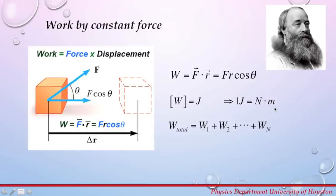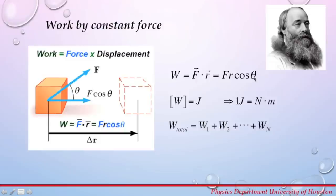Work can be positive or negative depending on the angle θ. If a force or a component of it is in the direction of the displacement, the work done on the object will be positive. If the force acts in the opposite direction of the displacement, the work done by the force will be negative. If the force is perpendicular to the displacement, the total work done on the system will be zero, because cosine of 90° equals zero. If we have a system where two or more forces act on it, the total work done is the sum of the work done by each individual force.